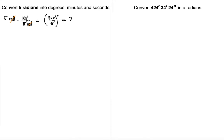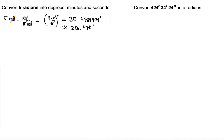And as a result, in the calculator, what this should give you is 286.47889476 degrees. Rounding to four decimal places gives us 286.4789 degrees.